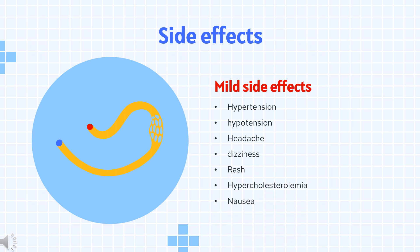Adverse cardiovascular effects include: hypertension 8%, hypotension 4%, atrial fibrillation 3%, bradycardia 3%, non-cardiac chest pain 3%, peripheral edema 3%, and thrombotic thrombocytopenic purpura (TTP).